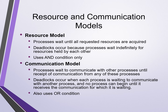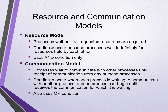Chandi, Misra, and Haas's algorithms handle two models: both the resource model and the communication model. In the resource model, processes that request resources must wait until they are allocated all resources requested before they can begin computation. For example, if a process needs resources A, B, and C, it must wait until it receives all three resources. Deadlocks can occur when processes wait indefinitely for resources held by each other. This means resource requests use the AND condition exclusively. In the communication model, processes must wait to communicate with other processes until receipt of communication. Deadlocks can occur when each process is waiting to communicate with another process and no process can begin until it receives the communication for which it is waiting. Communication requests use AND and OR conditions for resource requests.